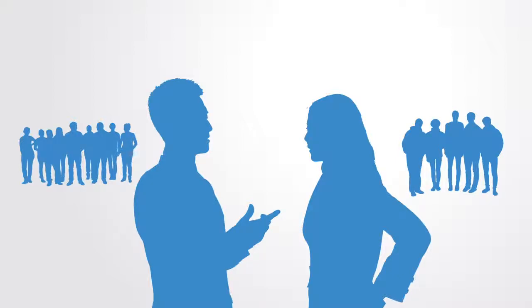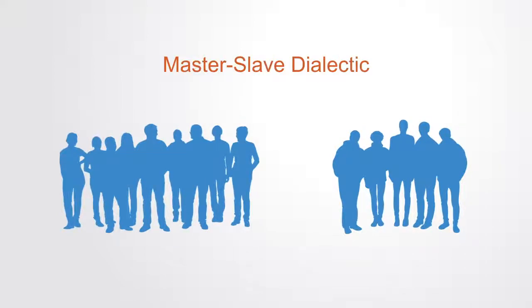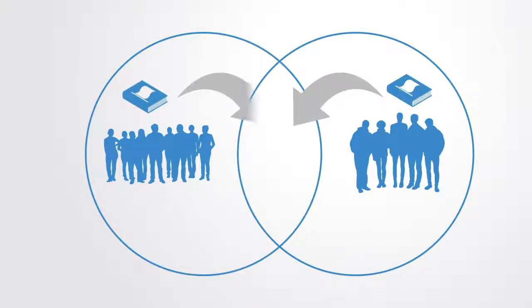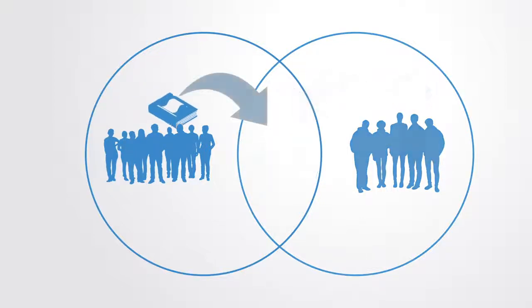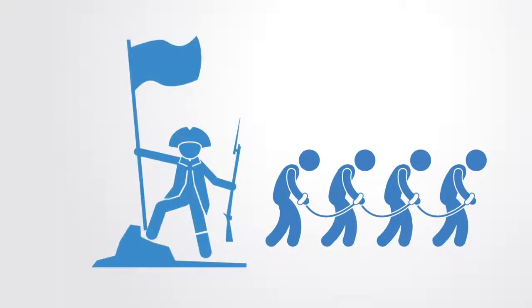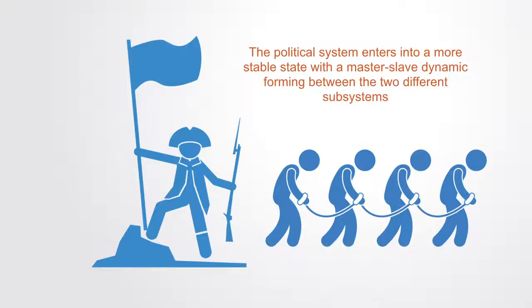This struggle develops into what Hegel calls the master-slave dialectic. Both actors struggle for power, each trying to project their subjective rules onto the objective rule set of the combined organization, limiting the other's influence through force or manipulation. At some point, one side comes to fear its annihilation and submits. The political system then enters a more stable state with a master-slave dynamic forming between the two subgroups.